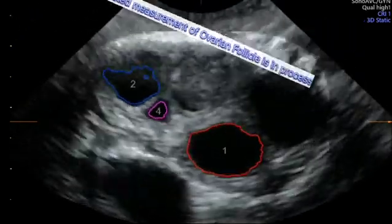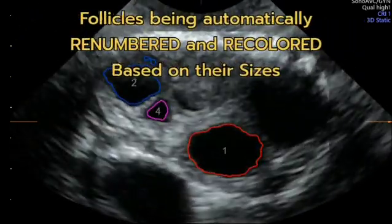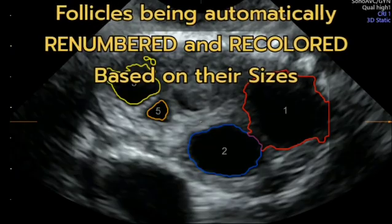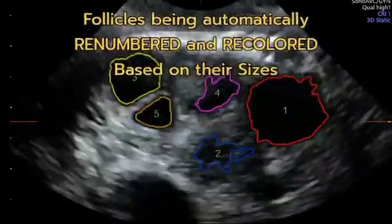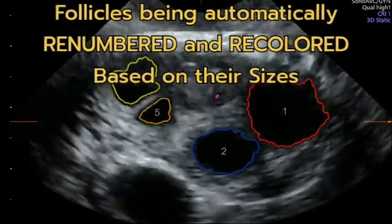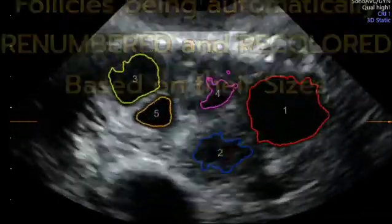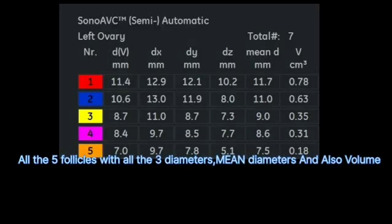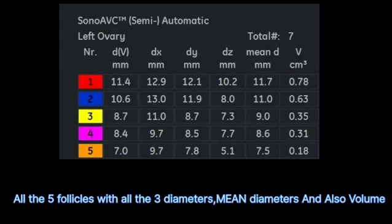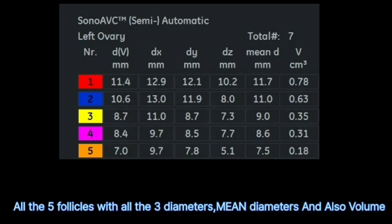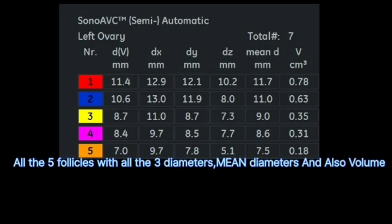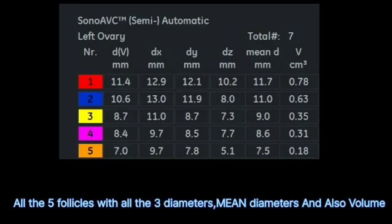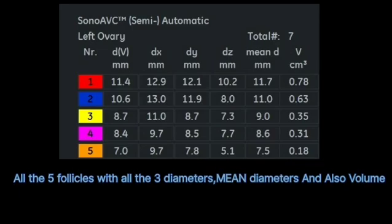With a simple tap on the report button, I will be able to see all three diameters of each follicle listed in descending order. The biggest follicle is labeled as number one and colored red, while the next biggest follicle is color-coded blue, continuing in descending order.